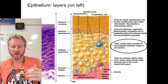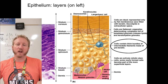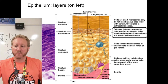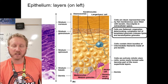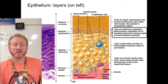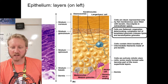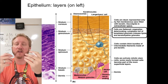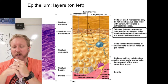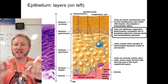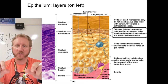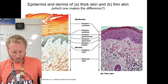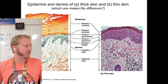The stratum spinosum is one of the thickest layers, characterized by flattening cells. Moving up is the stratum granulosum, where cells become very flat, organelles deteriorate, and cells are dying or already dead. There are little granules full of lipids and keratin precursors — this is the intermediate step before the final layer.